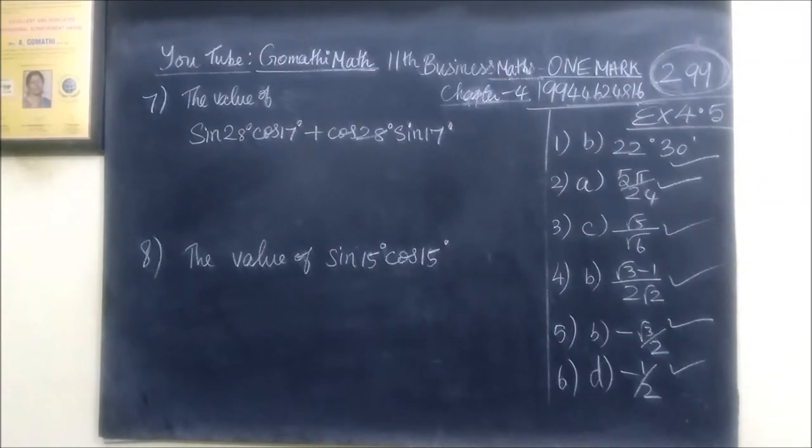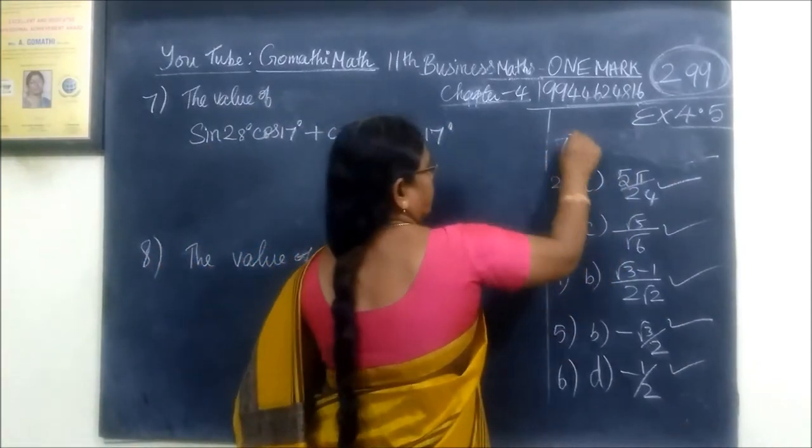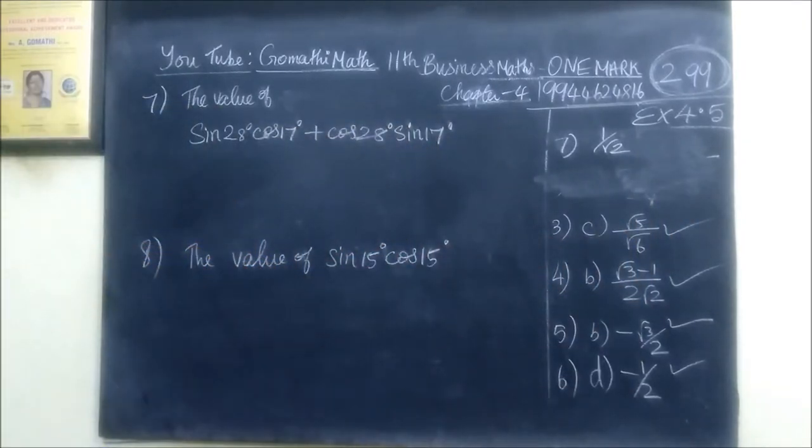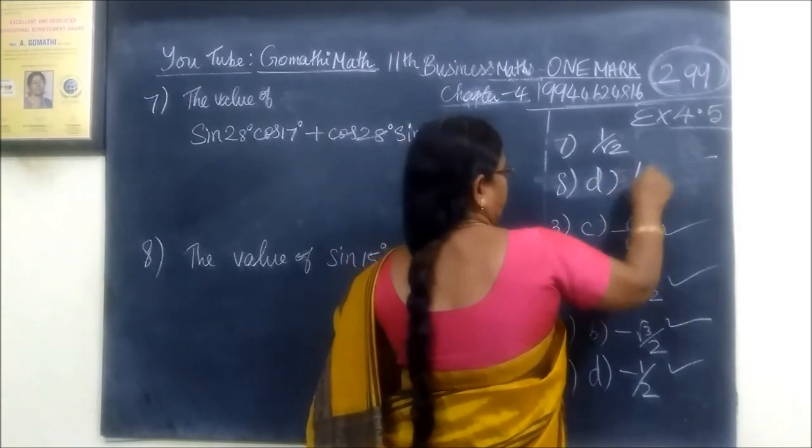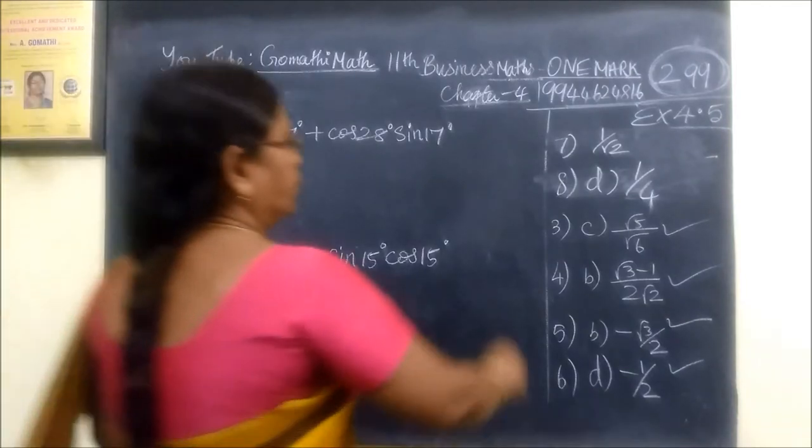Question number 7 and 8. Question number 7 is answer 1 by root 2. This is the answer 1 by root. Then for question number 8, 1 by 4. So 8 is equal to option D, 1 by 4, 1 by root. Option is correct, option is A.